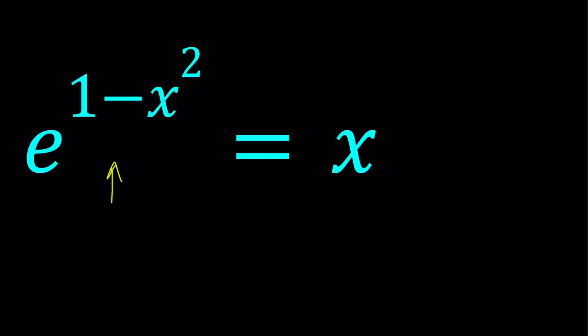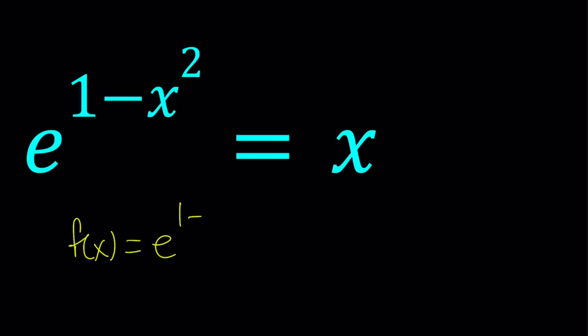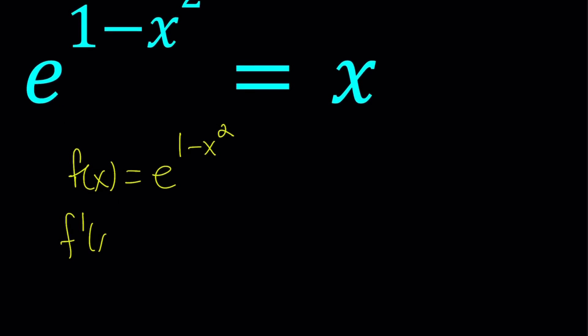Is this function increasing, or is it always decreasing? Because if we know that, then it's easier to solve, since y equals x is always increasing. If you have a decreasing function on the left, then they can only intersect at a single point. Let's look at the first derivative of our exponential function. We don't know yet if it's decreasing or increasing, or on which intervals. So let's call this f of x equals e to the power 1 minus x squared, and differentiate it. By the chain rule, f prime of x equals e to the power 1 minus x squared, times negative 2x.